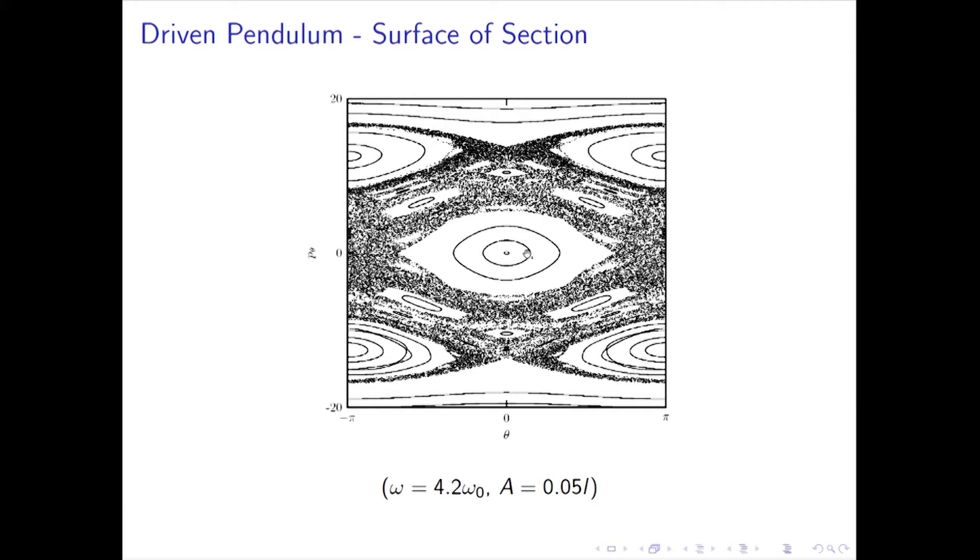This is a different initial condition. And then all these scattered dots belong to a chaotic trajectory. So you see another characteristic of chaotic behavior is that, besides sensitive dependence on initial conditions, you find that the dimension of the space that's explored by the trajectory is different. Chaotic trajectories explore a larger dimension of the phase space. This is called the divided phase space.